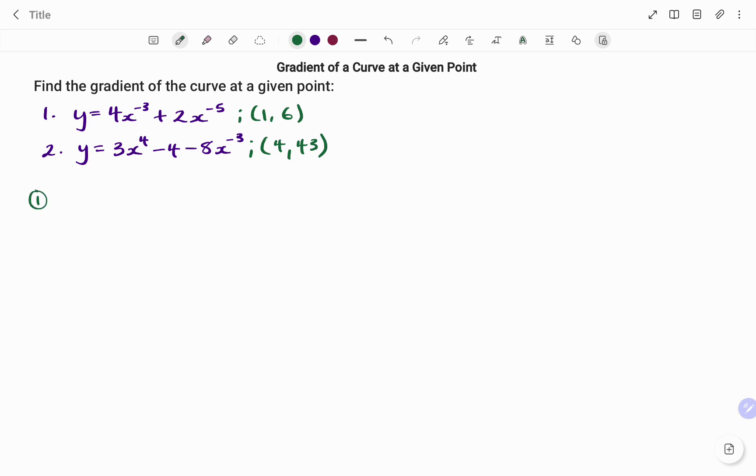In the first example, we have the function y equals 4x to the power of negative 3 plus 2x to the power of negative 5. We have to find the gradient of the curve at point (1,6). The first step is to find the derivative or the dy/dx of the function.